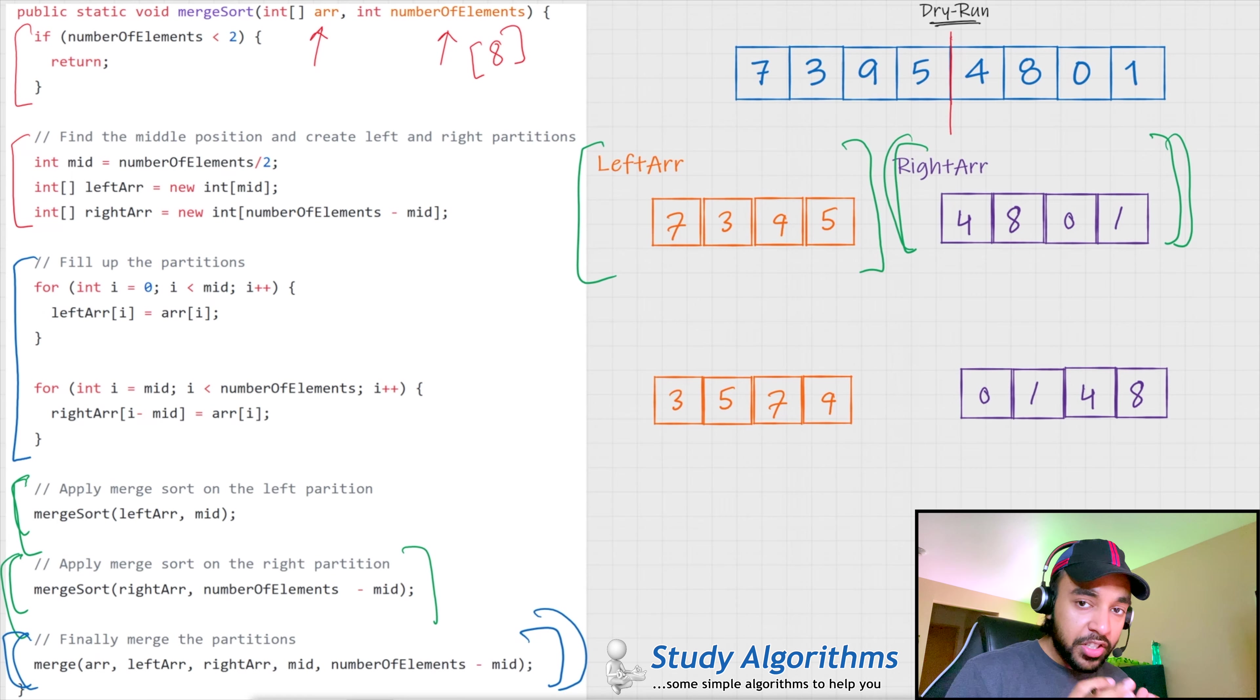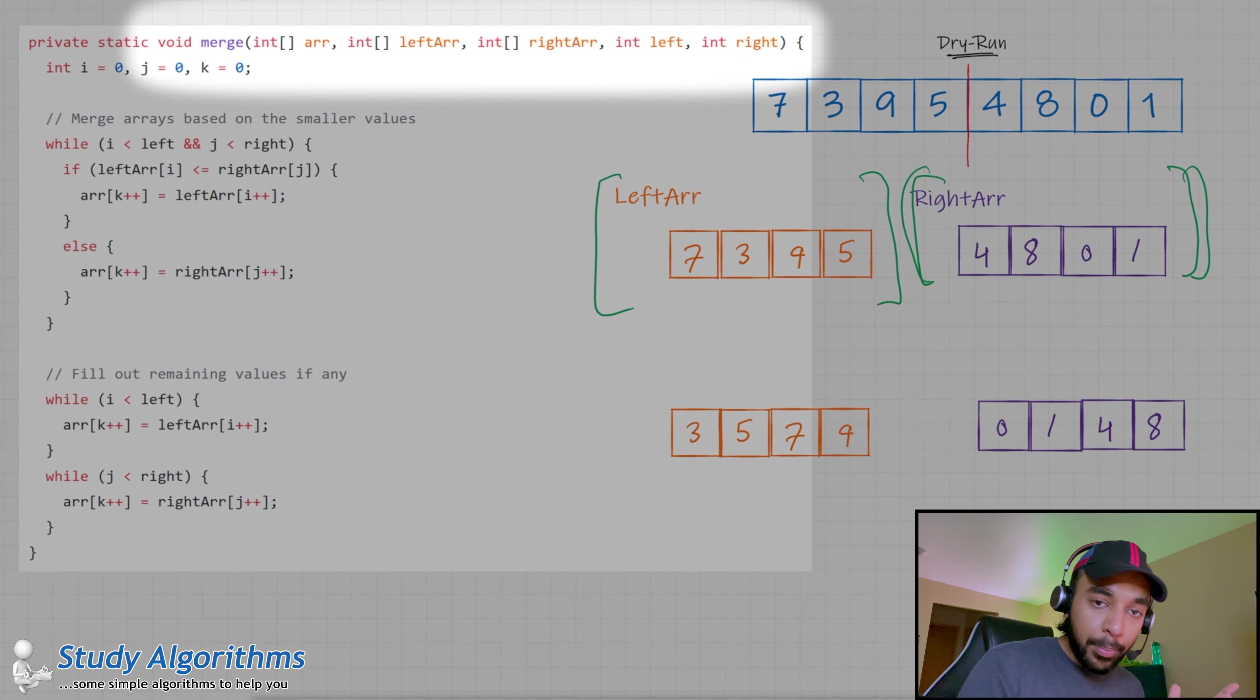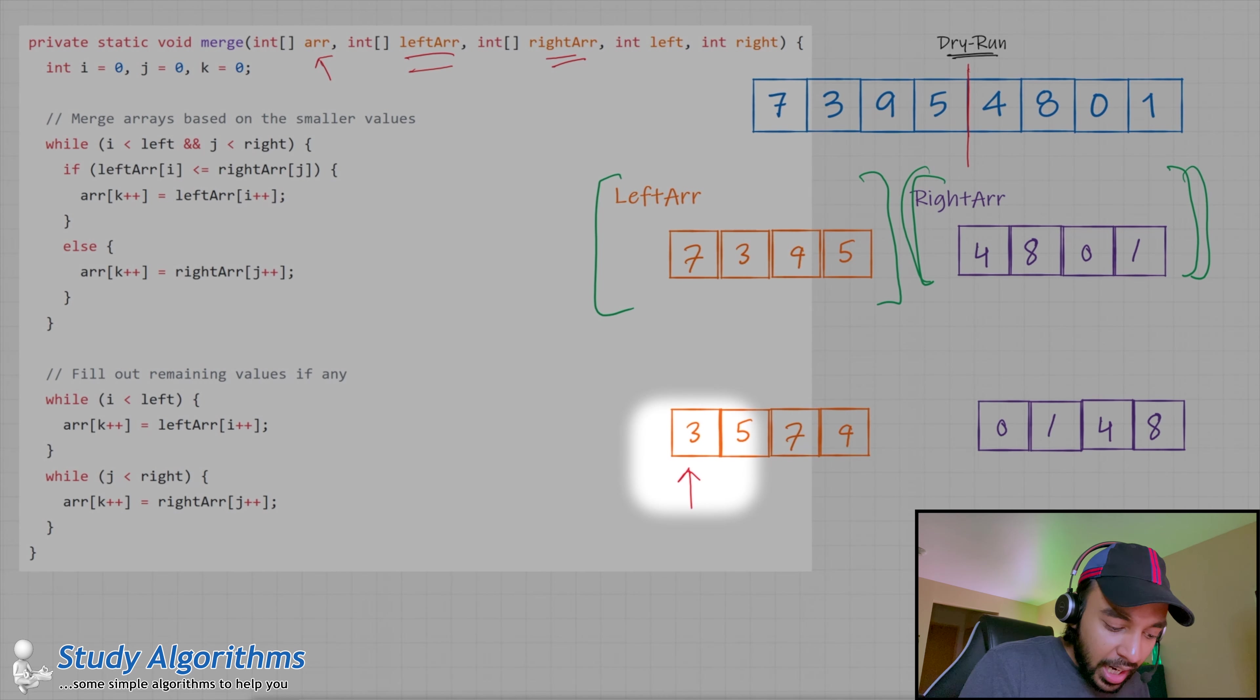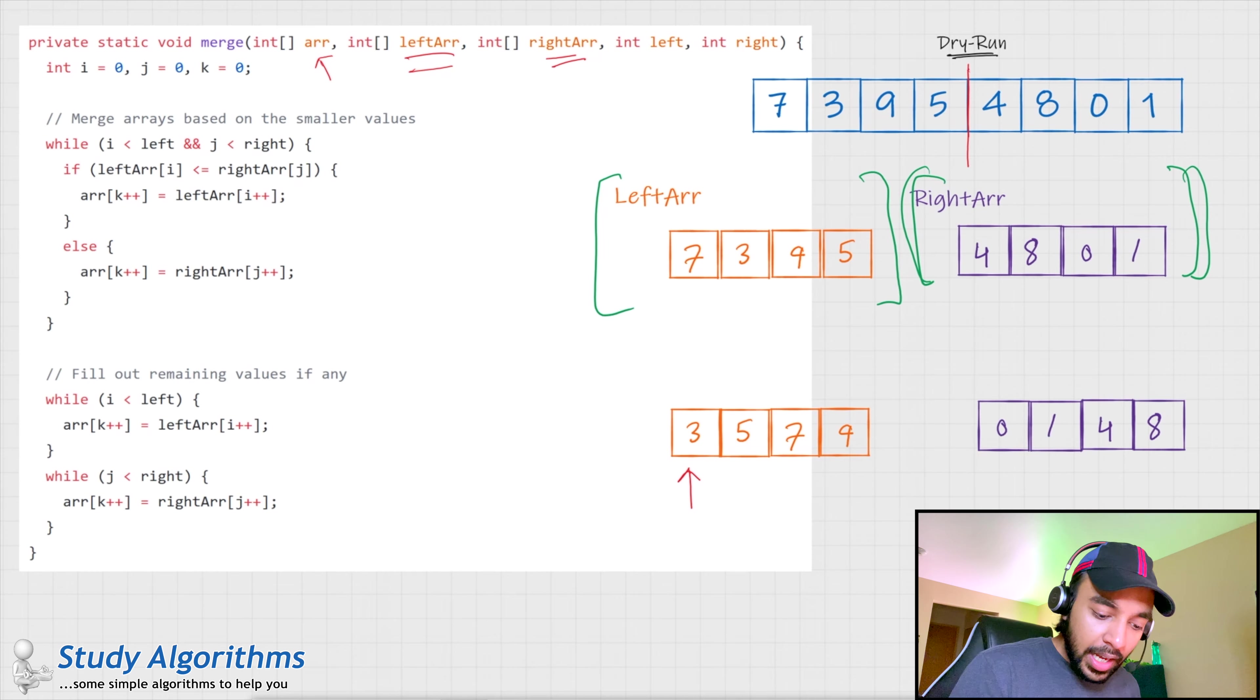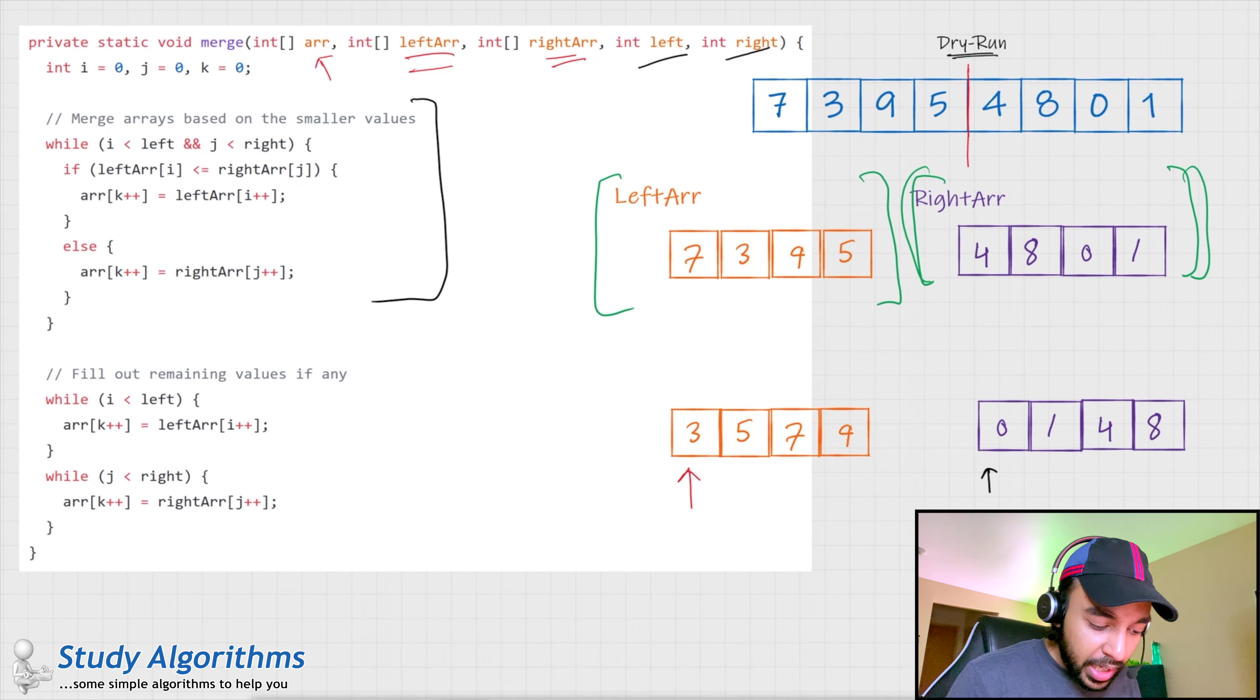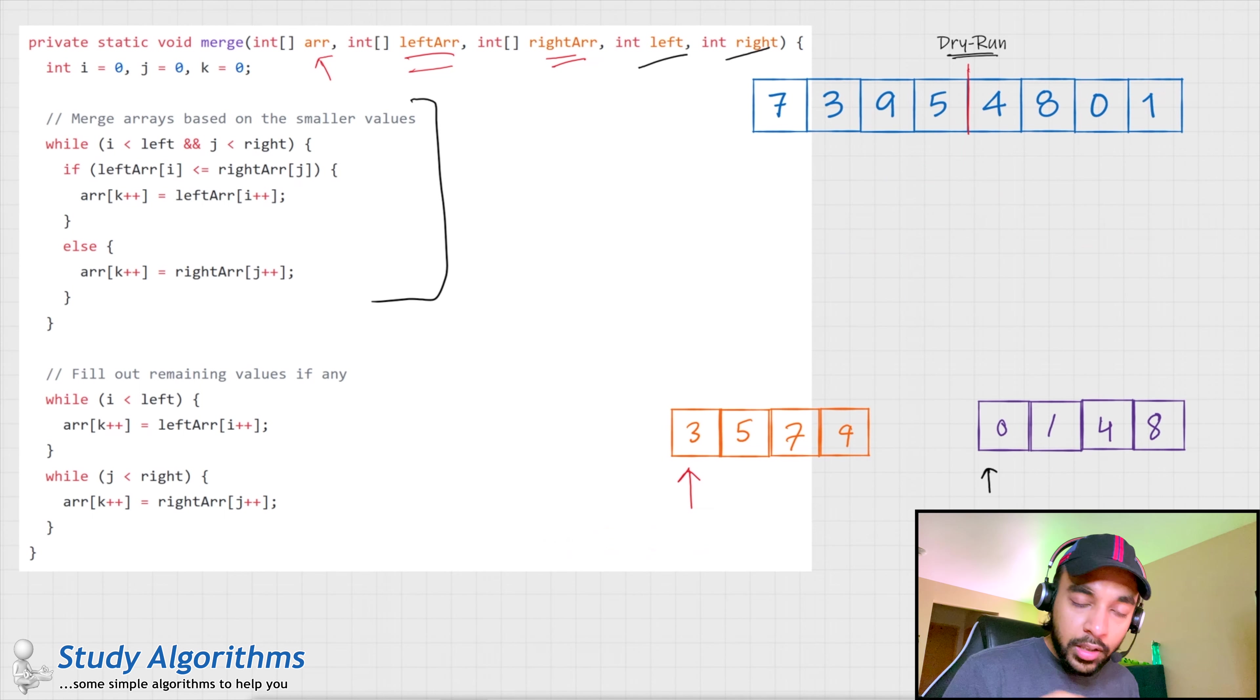So, how merge works is, I pass in my original array, I pass in the left half and the right half. And, I pass in the starting index of the left array and I pass in the starting index of the right array. So, just like the way we did in our example, we would be merging these values based upon the smaller values. So, if you compare 3 and 0, you would see that 0 is smaller. So, you copy 0 in the main array at the first position and you advance your pointer.